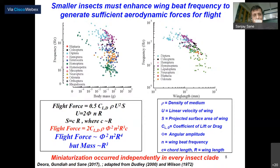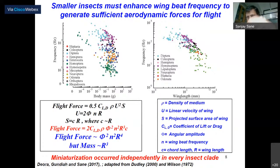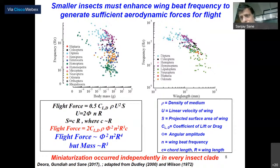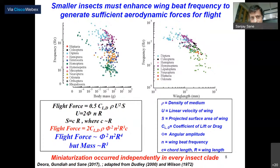Looking at the data: on the left is a plot of wingbeat frequency as a function of body mass, and on the right as a function of wing length — both log-log plots. As insects get smaller, wingbeat frequency increases. For insects less than a centimeter or so, wingbeat frequency exceeds 100 Hz and can even go up to 1,000 Hz in midges and mosquitoes. This is an extraordinary ask from the nervous system — to control wing movement at these high frequencies is quite extraordinary. The real question is: how does the nervous system achieve this?